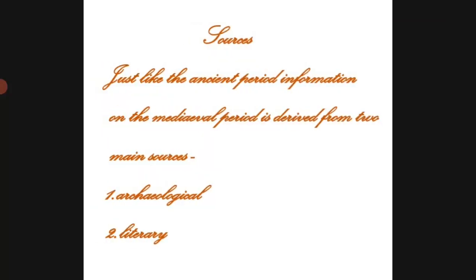Now let us move on to the sources. Just like the ancient period, information on the medieval period is drawn from two main sources: first is archaeological, and second is literary. There is an abundance of sources for this period. The books written during this period are available to us and the monuments that were constructed still stand. That is why we know much more about the medieval period than the ancient period.